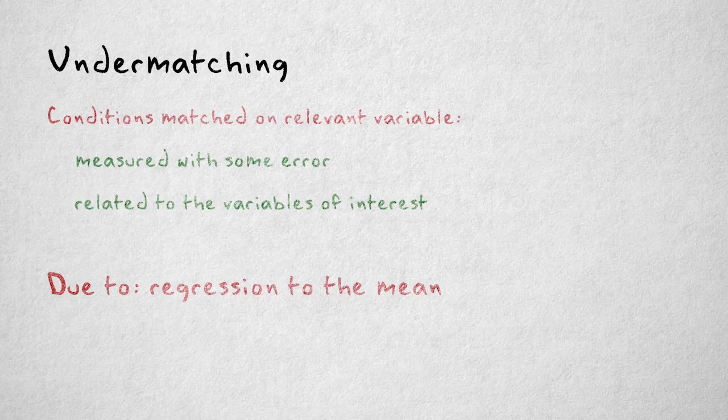Suppose we were able to measure someone's intelligence repeatedly, without any practice effect. Assuming the test we use is valid and reliable, we would still get slightly different results each time, since we cannot measure intelligence perfectly.